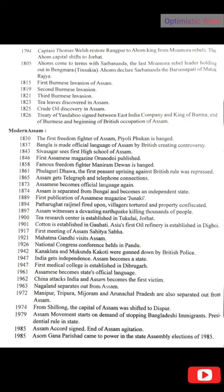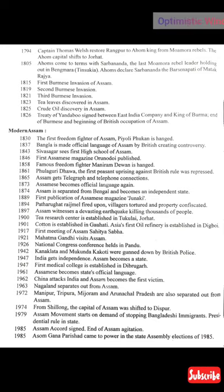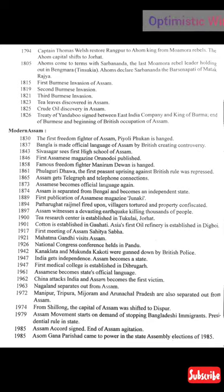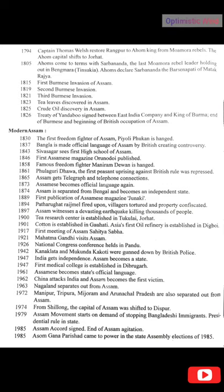In 1823, tea leaves are discovered in Assam. In 1825, crude oil is discovered in Assam. In 1826, the Treaty of Yandabo is signed between the East India Company and the king of Burma, marking the beginning of British occupation of Assam. The Yandabo Treaty is one of the landmark events in the history of Assam and is really important — a video on it will be made in the future.